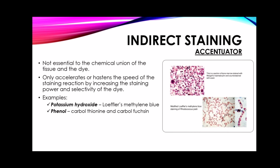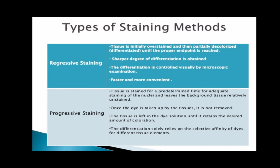There is also progressive and regressive staining. Progressive staining is the process whereby tissue elements are stained in a definite sequence, and the staining solution is applied for specific periods of time until the desired intensity of coloring of the different tissue elements is attained. Once the dye is taken up by the tissue, it is not washed nor decolorized. The differentiation of tissue detail relies solely on the selective affinity of the dye for different cellular elements.